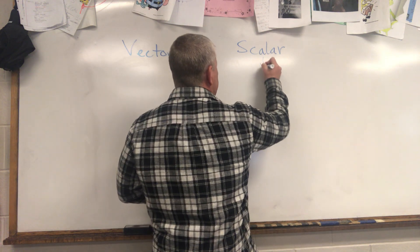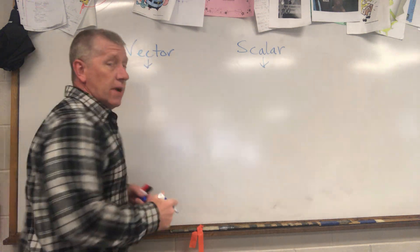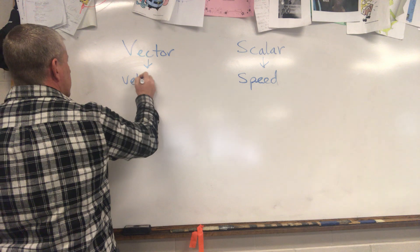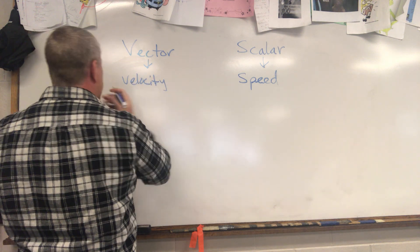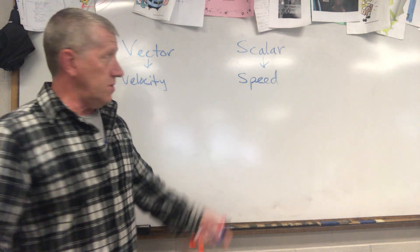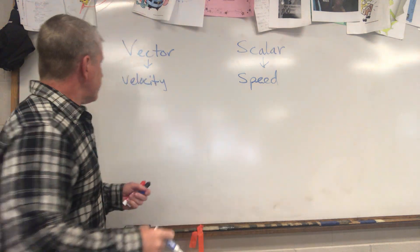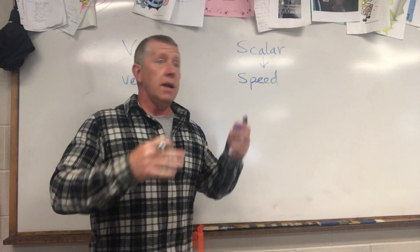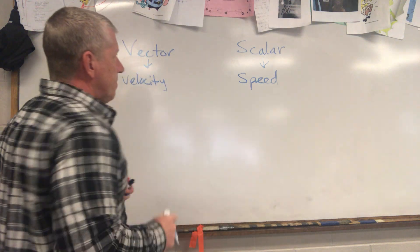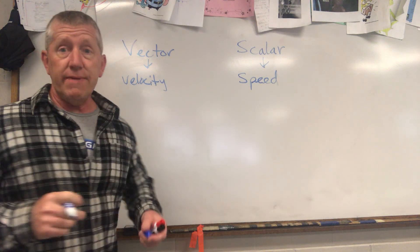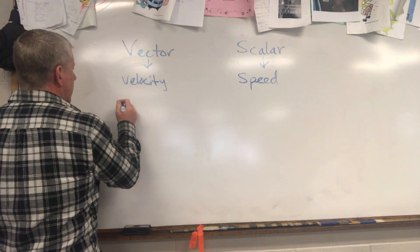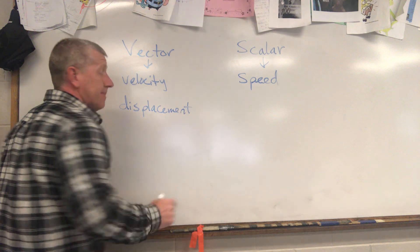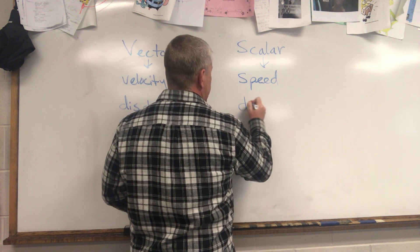Some examples of scalar and vector — we've done this already in terms of speed and velocity. Speed is just a number; your speedometer tells you how many miles per hour you're going. Velocity would be how many meters per second in a particular direction. Another important one is displacement — that is a vector. It's the vector version of distance.